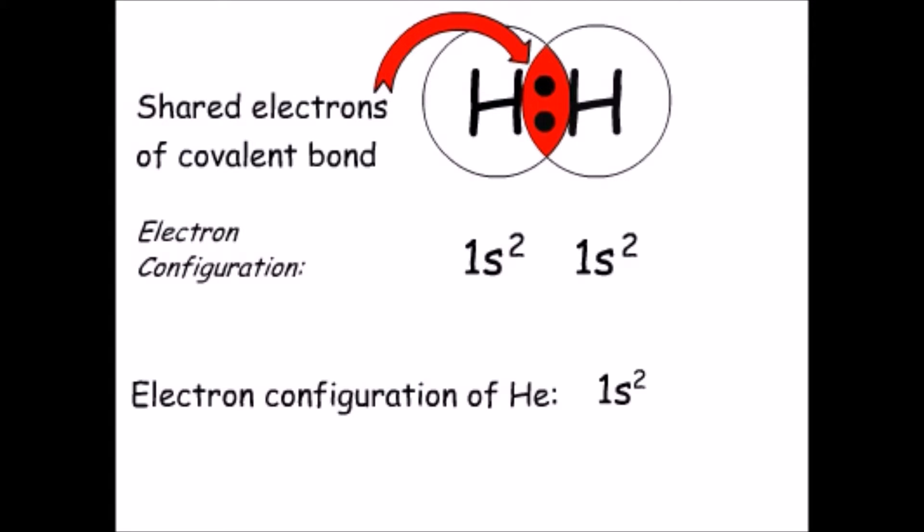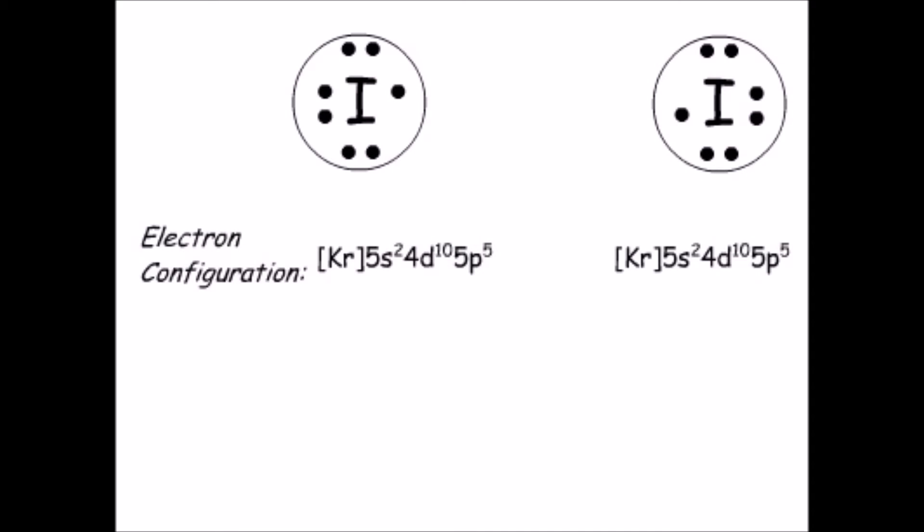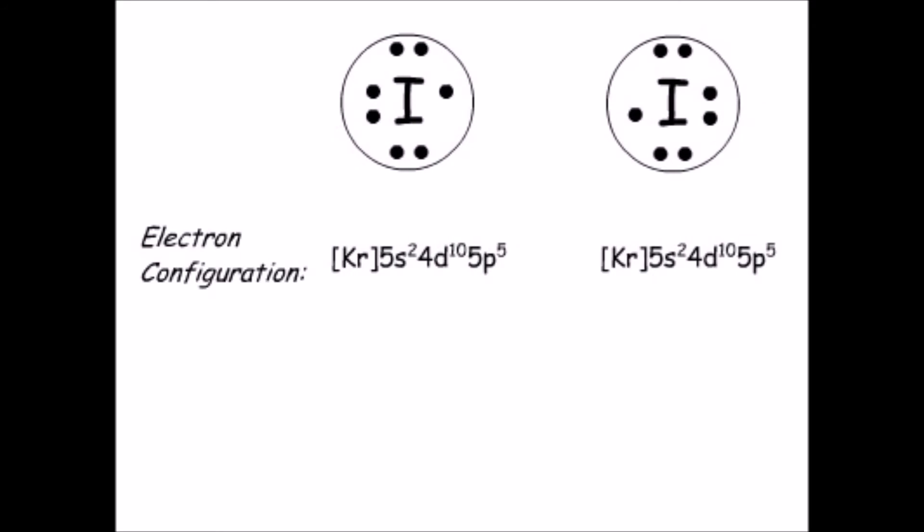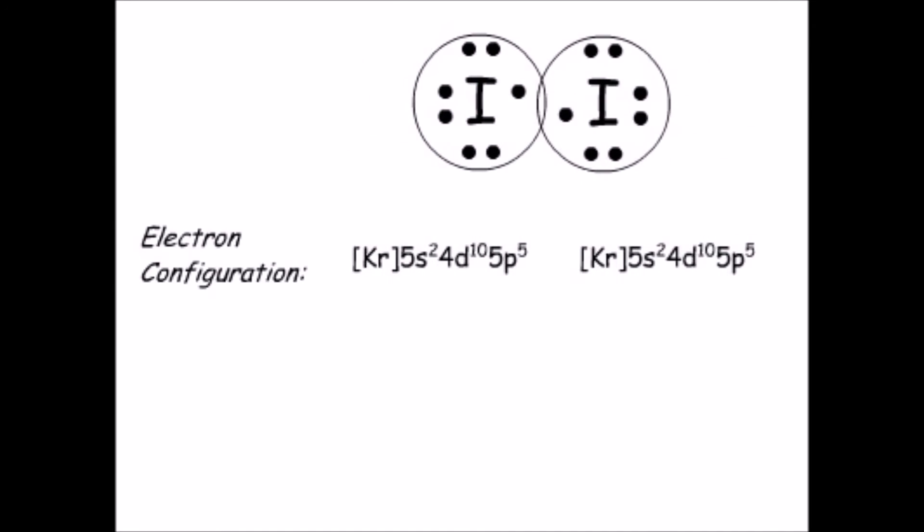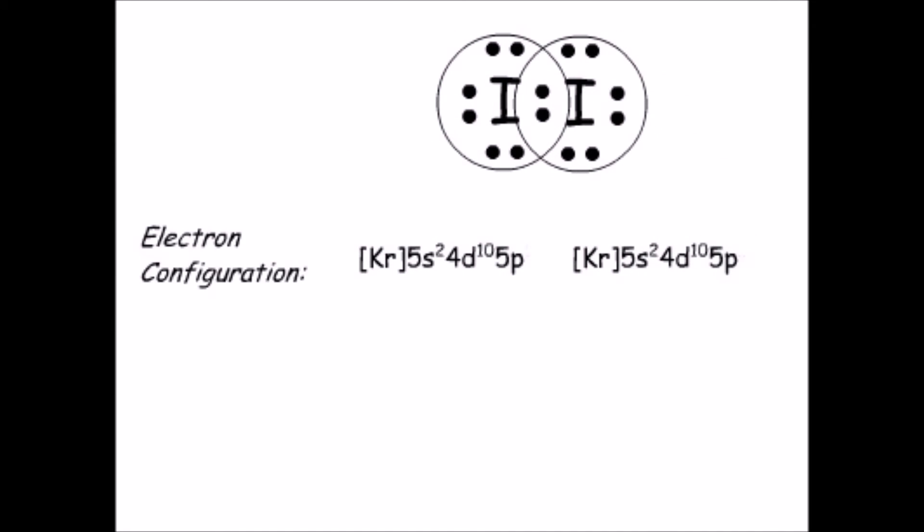The covalent bond between like halogen atoms is also a pure covalent bond. Take the example of iodine. Each iodine atom contributes one valence electron to the bond. That gives each of the iodine atoms of the I2 molecule a closed-shell configuration, like that of the noble gas xenon.